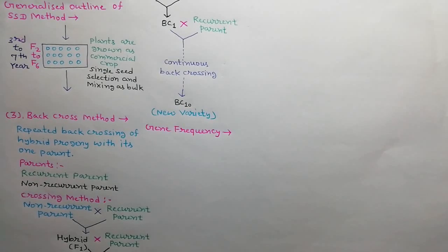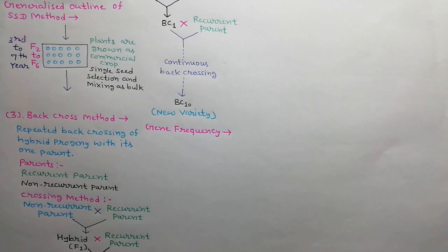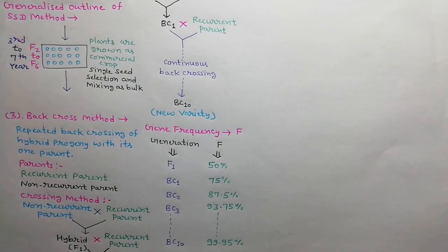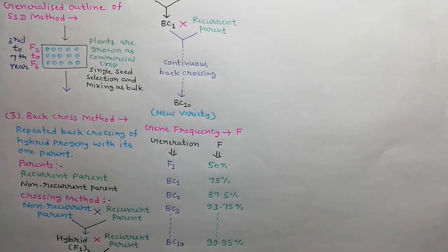As the BC generations proceed, the gene frequency of the recurrent parent increases: in F1 generation 50%, in BC1 75%, in BC2 87.5%, in BC3 93.75%, and lastly in BC10 99.95%.